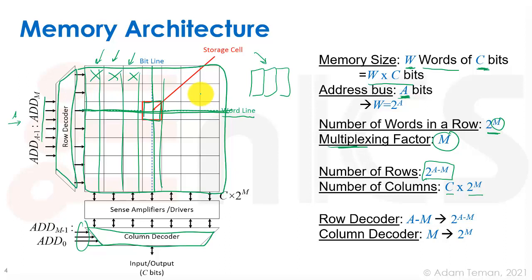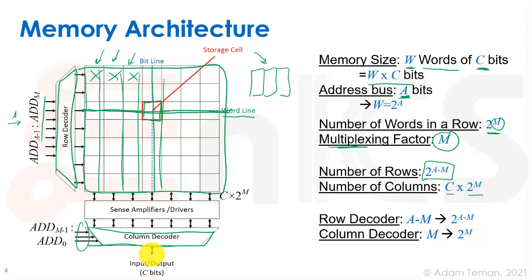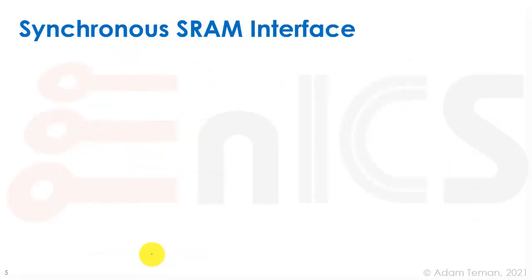The column decoder takes the bit lines running down and selects one word — perhaps 32 bits or 8 bits — from the columns. It's a multiplexer that takes M bits and chooses one out of 2^M lines, propagating that selection to the output. We'll see how it's built and why we call it a column decoder when it's actually a multiplexer. So now that we've seen the structure and given names and sizes, we'll look at what a synchronous SRAM interface looks like.